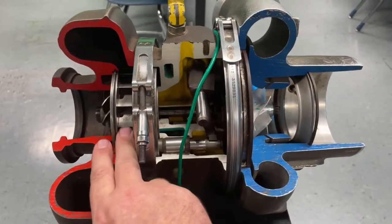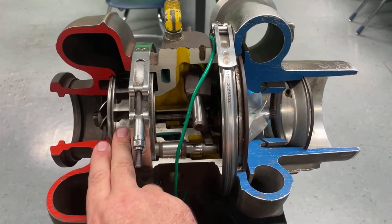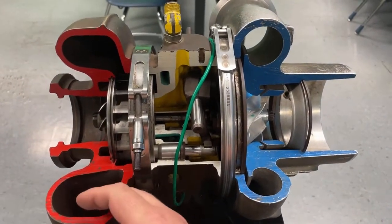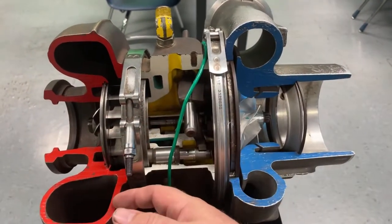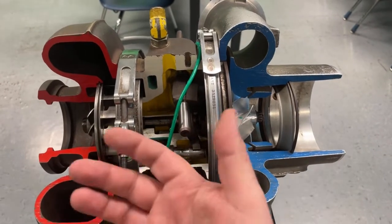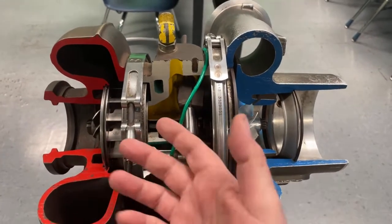So by creating a restriction over here on this side with the turbo, you can actually raise exhaust back pressure, which will help the EGR force its way into the intake with the help of things like Venturi's and EGR mixers and stuff like that. So it can help with EGR.